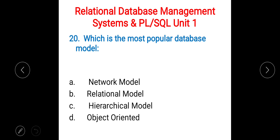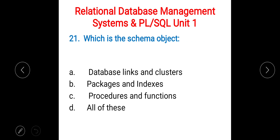Next question: which is the most popular database model? A) network model, B) relational model, C) hierarchical model, D) object-oriented. The right answer is B) relational model, because RDBMS stands directly for relational.